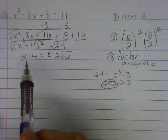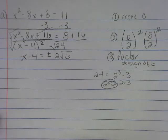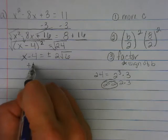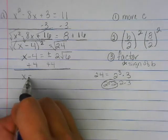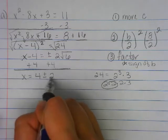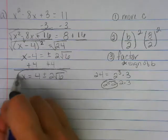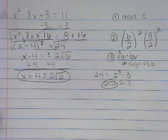What's our last step? How do I get X by itself? Plus four. Can I add four to a radical? No, I get four plus or minus two square root of six. That is the root.